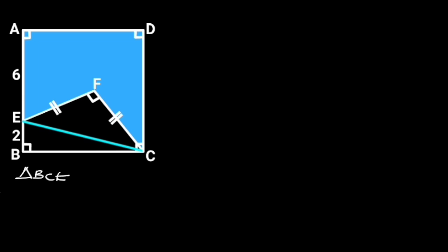To solve this problem, first let's join CE with a straight line. Next, let's focus on triangle BCE. Triangle BCE is a right triangle. From Pythagoras theorem, CE squared is equal to BC squared plus BE squared. BC is equal to 8 — that is the length of the square.